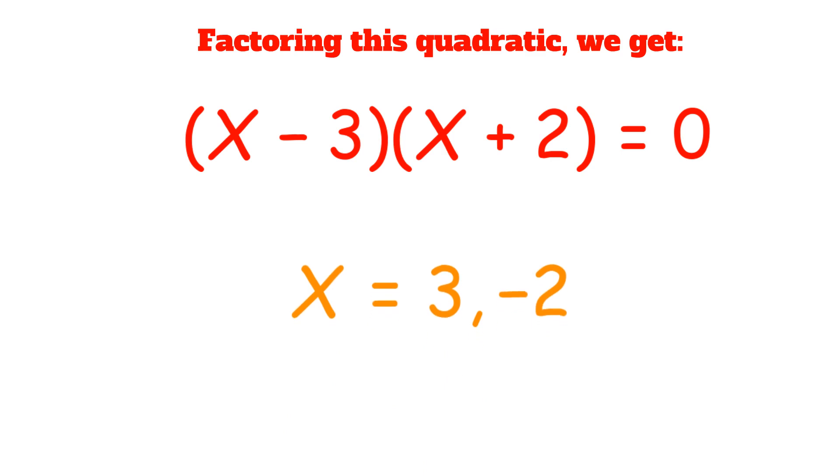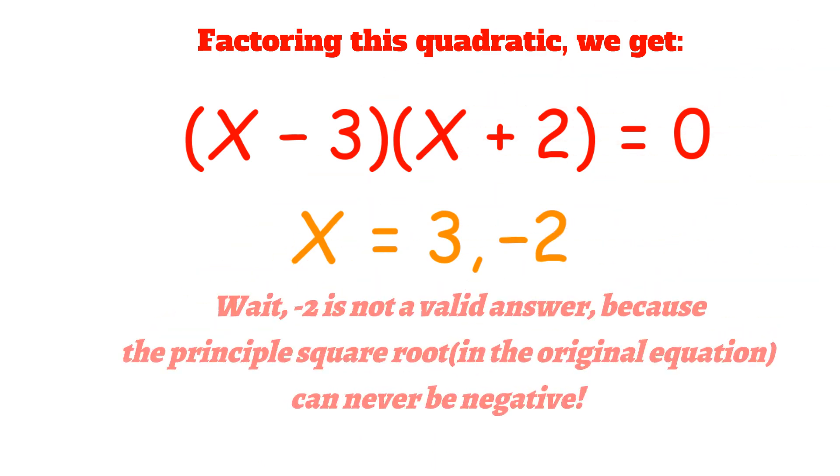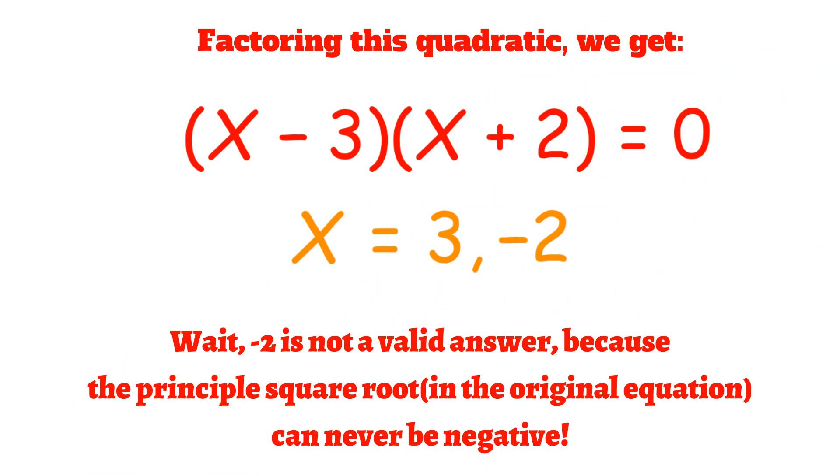Thus, x is either equal to 3 or negative 2. But wait, negative 2 is not a valid answer because the principal square root which is in the original equation can never be negative.